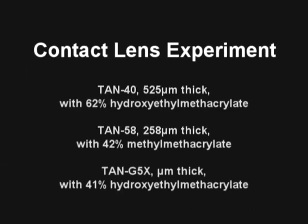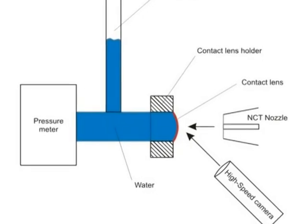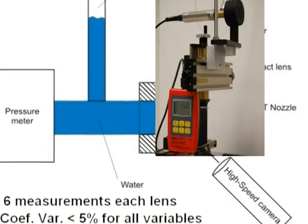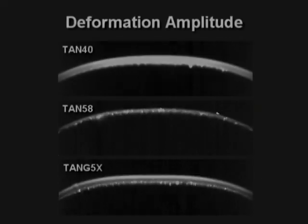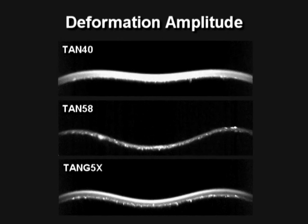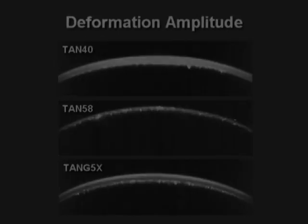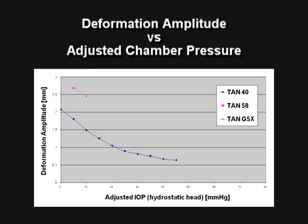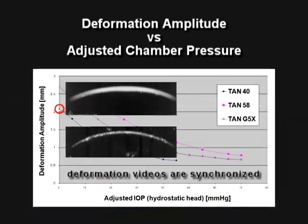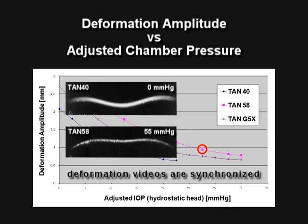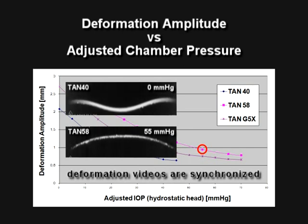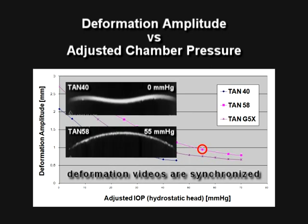An experiment was performed using different types of hydrophilic contact lenses mounted on a sealed, tightly controlled pressurized water chamber. The pressure was set from 0 to 70 mmHg with 5 mmHg intervals. The deformation amplitude, related to the stiffness of the lens in the system, was tabulated along with other variables. Each lens had a different deformation behavior, and pressure significantly influenced the deformation response. For example, the stiffest lens, Tan40, at zero pressure, compared with the most pliable, Tan58, at higher pressure — the deformation of the latter is less due to the impact of pressure on the deformation response.